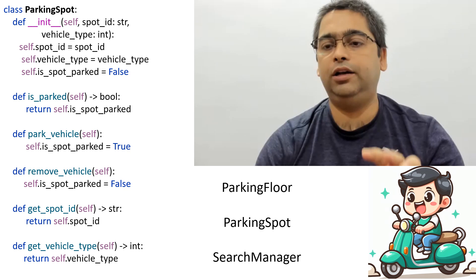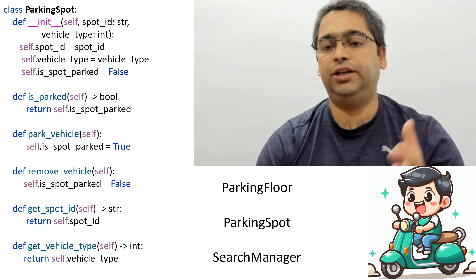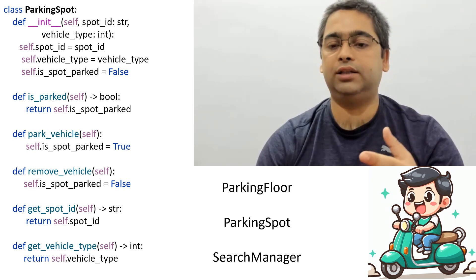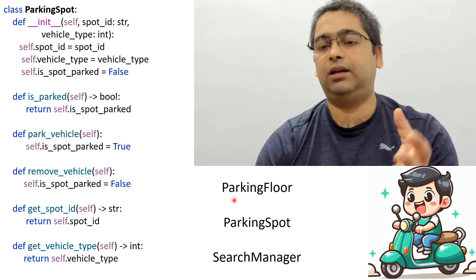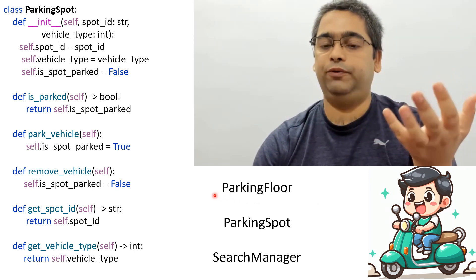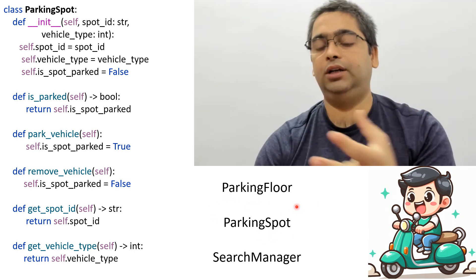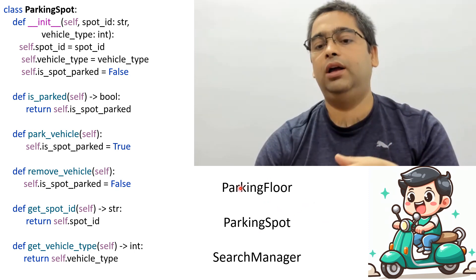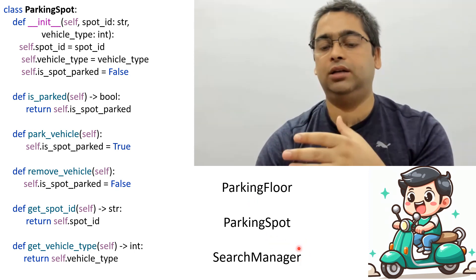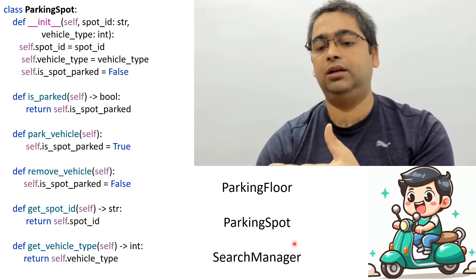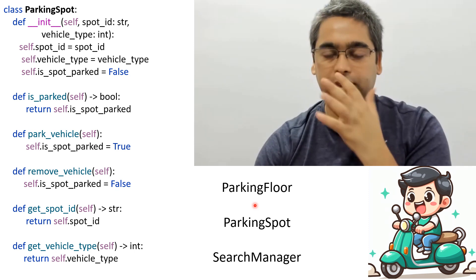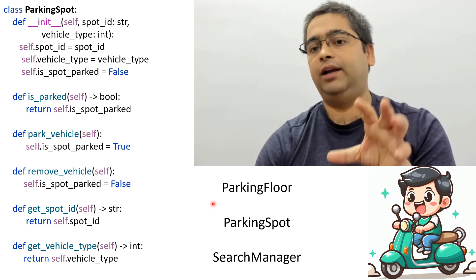In an LLD interview, the first thing you should do is list all the entity classes, because they are the easiest to identify. Parking lot is sort of the hello world of low level design questions. We have parking spot objects in a 2D array inside each parking floor, a list of parking floors inside the parking lot, and a search manager class for the search functionality.